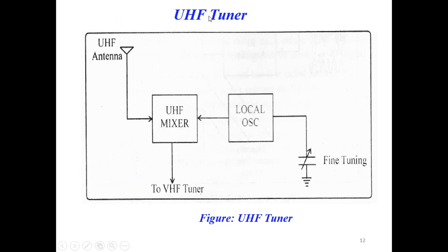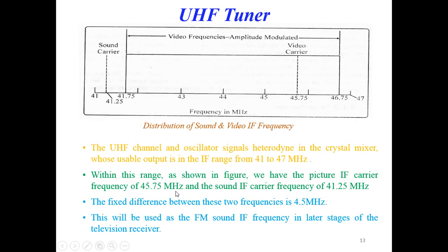In the UHF section: the UHF antenna feeds into the UHF mixer, which receives the local oscillator signal and outputs towards the VHF tuner. The IF range is from 41 to 47 MHz. Within this range, the picture IF carrier — that is the video carrier — is at 45.75 MHz, and the sound IF carrier is at 41.25 MHz.